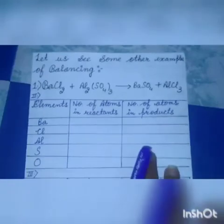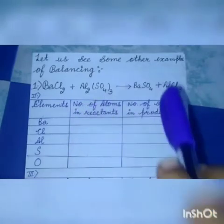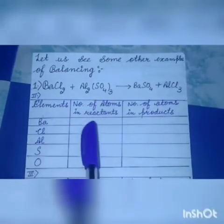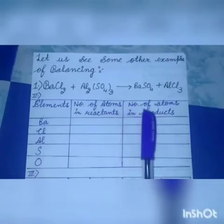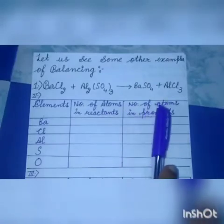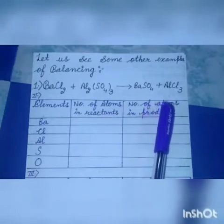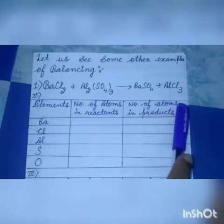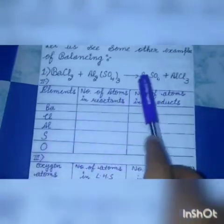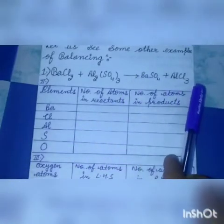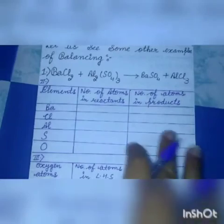Here this is a reaction between barium chloride and aluminium sulphate. And as a result, barium sulphate and aluminium chloride are produced. Now we have to balance this reaction. Let's start.